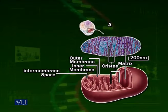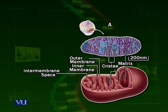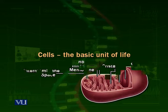Cell — the basic unit of life. You can see in the diagram on the right side a diagram of the mitochondria, the powerhouse of the cell, and on the left a transmission electron microscope image of the same mitochondrion. It has many membranes and produces all the energy required by the cell in the form of ATP — adenosine triphosphate.